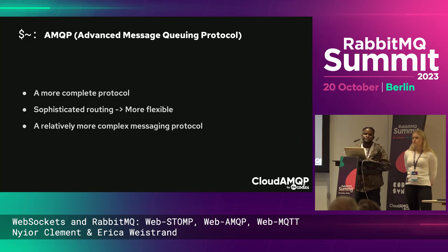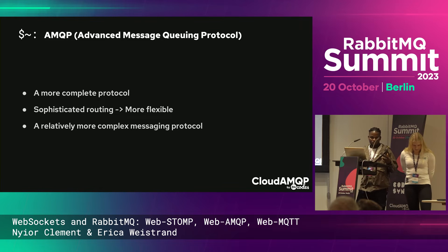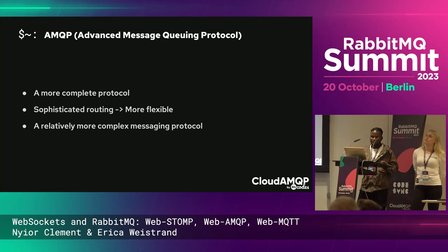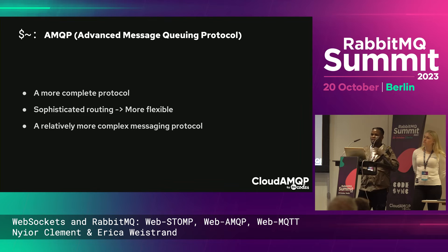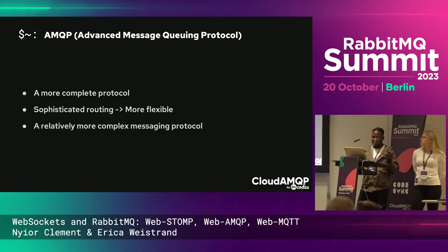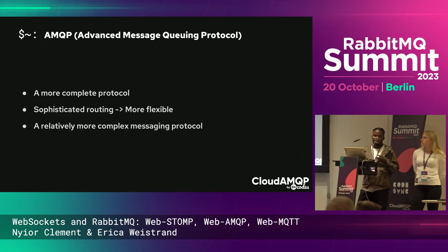AMQP is a relatively more complete protocol in terms of features. For example, it has a more sophisticated routing mechanism, which makes it more flexible — you could use it in different messaging scenarios. But with more power comes complexity; AMQP's feature richness makes it a relatively more complex messaging protocol.